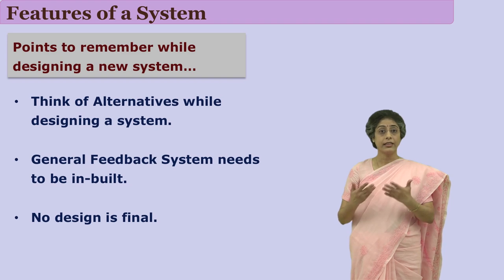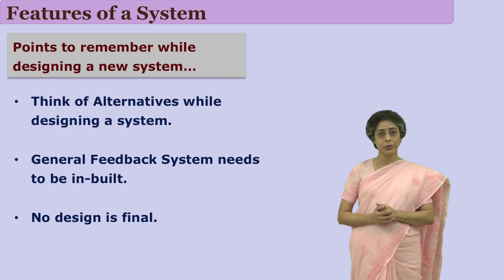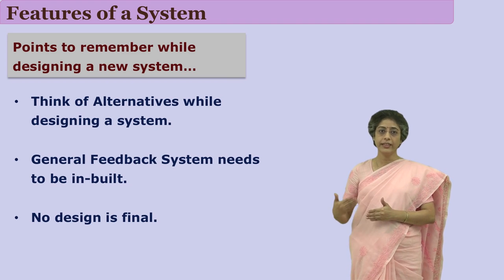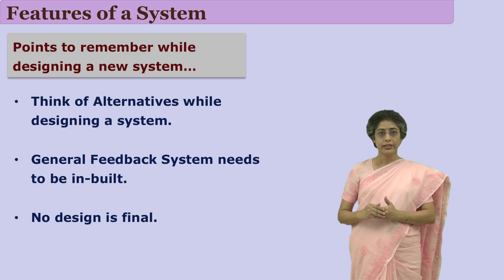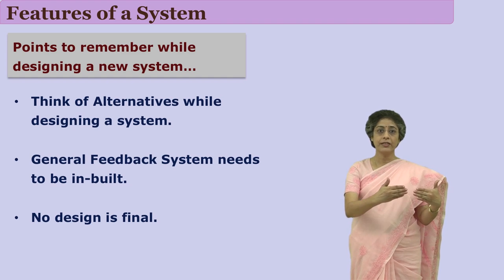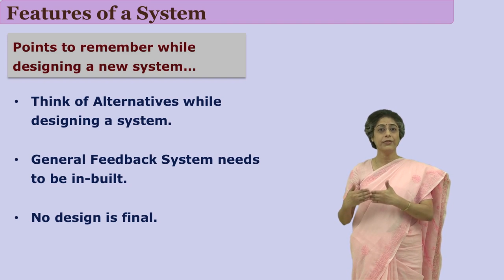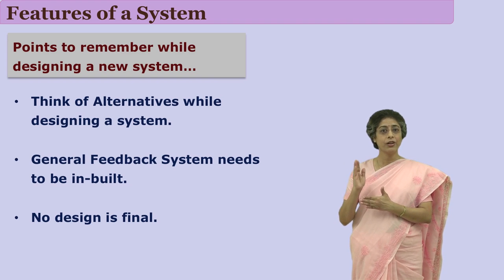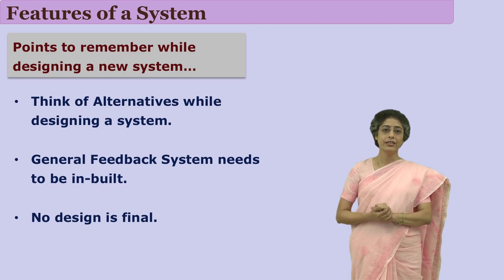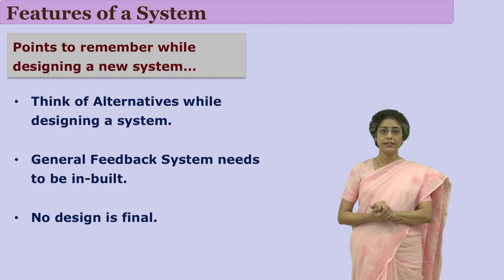When do we realize that a particular alternative is failing? If we have decided some goals and designed a system in light of those goals, then for implementation there should be some feedback mechanism. If we have a feedback mechanism, we will understand that a particular system is not achieving its goals, and then we use the other alternative. So a feedback system should be inbuilt in any system.